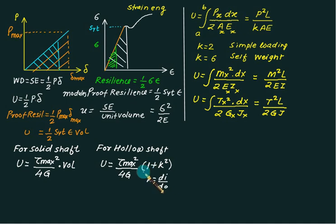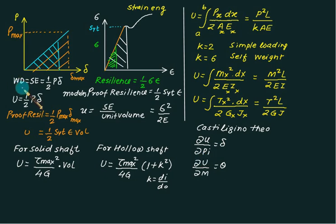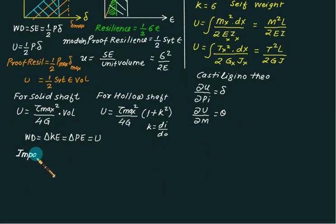To find deflection, we use Castigliano's theorem. If we know the strain energy U, we can find deflection by partially differentiating U with respect to the load to get delta, and partially differentiating with respect to moment to get theta (the slope of the elastic curve). For spring collision of a wagon, work done equals kinetic energy, and change in kinetic energy equals change in potential energy, which equals strain energy U.